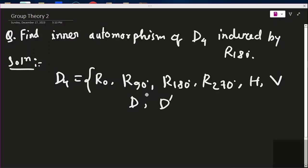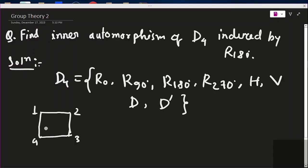D4 is the dihedral group of the square. If we label the vertices 1, 2, 3, 4, these symmetry elements of the square generate the group D4. These are the symmetry elements of the square.